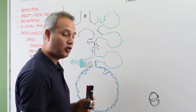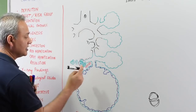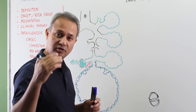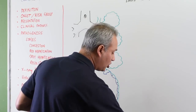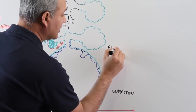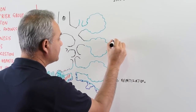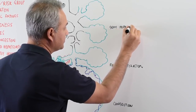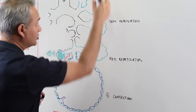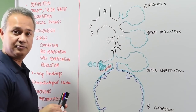Once pneumococcus enters the alveoli, it adheres to the epithelium and begins causing damage. The morphological changes occur in four stages: Stage 1 — Congestion; Stage 2 — Red Hepatization; Stage 3 — Gray Hepatization; Stage 4 — Resolution. These stages progress in sequence and describe the cellular events occurring in the alveoli during untreated infection.